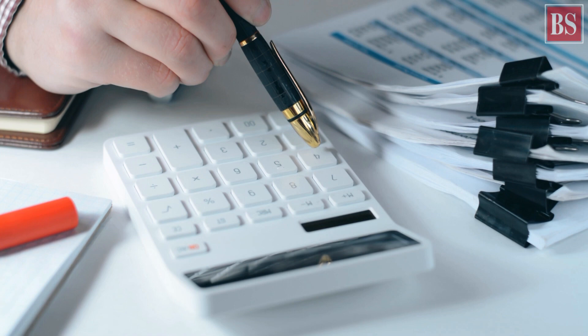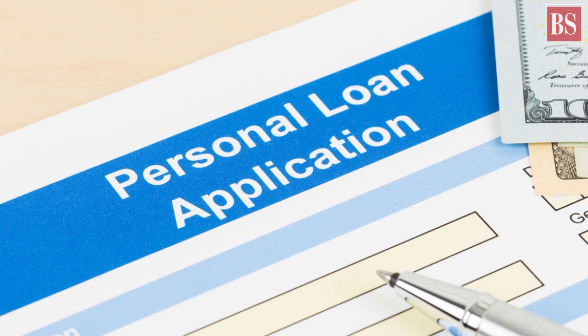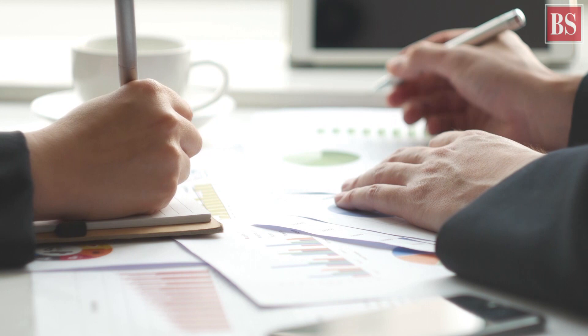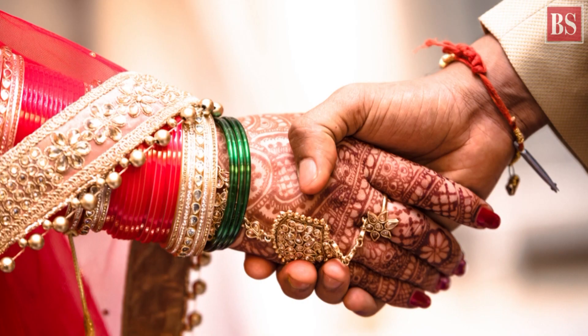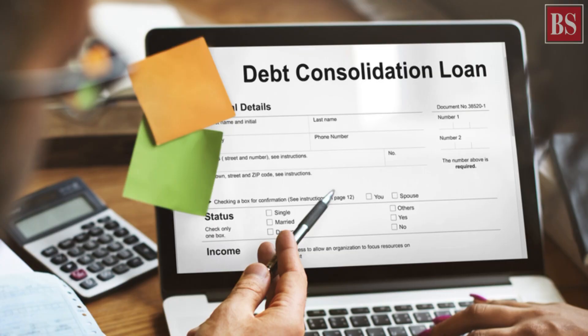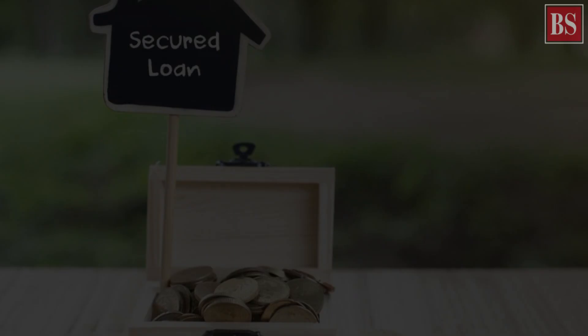The borrower repays the term loan in monthly EMIs until the end of the term. A popular form of unsecured loan is a personal loan, which can be availed for various purposes with no restrictions on end usage. They can also be availed for specific purposes like marriage, education, travel, emergency, or debt consolidation, which can be used to pay off existing unsecured debt obligations.